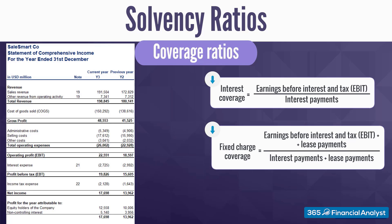We calculate the interest coverage ratio by dividing earnings before interest and tax — the EBIT measure — by the annual interest payments. This shows whether a firm's operating profit is sufficient to cover interest expenses. A slightly different analysis can be performed when companies have significant lease obligations; we would add the lease payments both in the numerator and denominator. This is how we arrive at the fixed charge coverage ratio, which tells us whether generated earnings are sufficient to cover all fixed finance expenses, including both interest and lease payments.